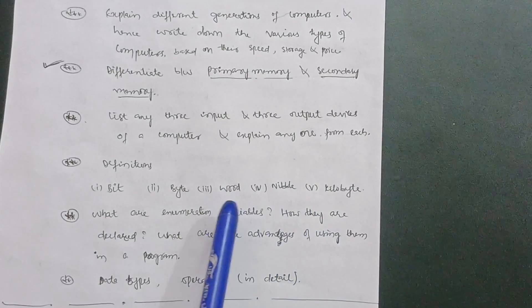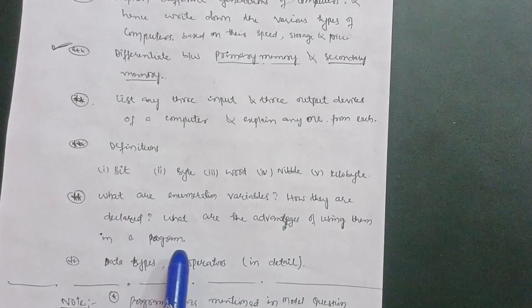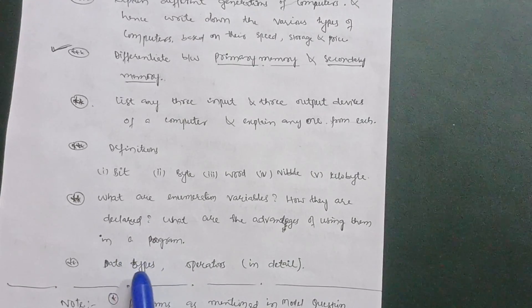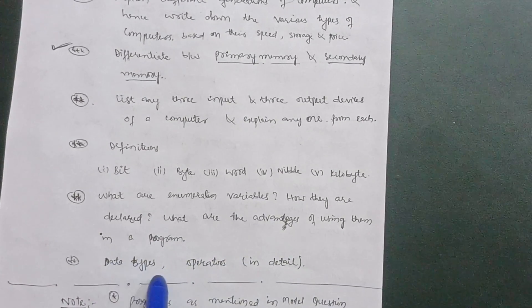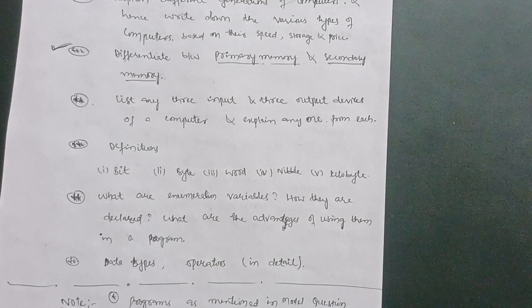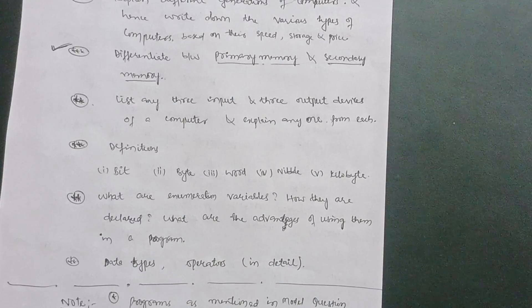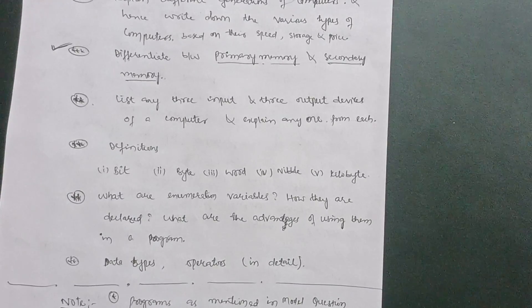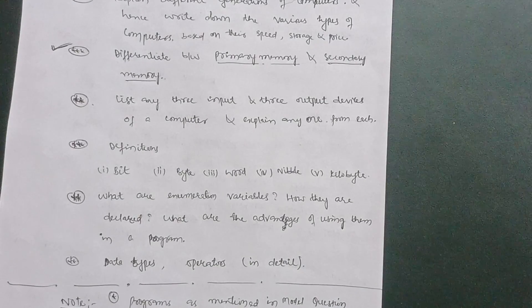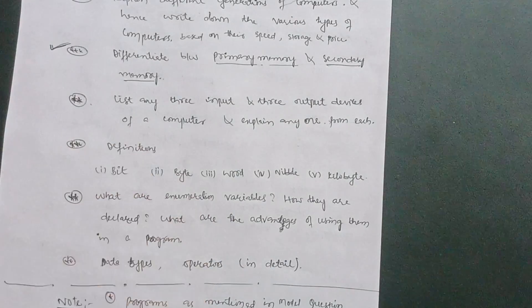Some simple definitions you need to cover: bit, byte, word, nibble, and kilobyte. Next, what are enumeration variables, how they are declared, and what are the advantages of using them in a program. You should also have knowledge about data types and operators in detail. Whatever programs are in the model question paper, practice them — but since there are 10 to 12 programs in this subject, for passing it is enough to cover the theoretical concepts in module one. No need to fear about the programs here.